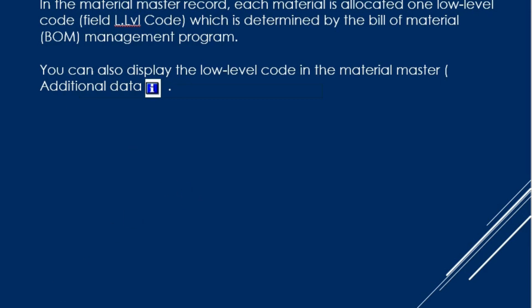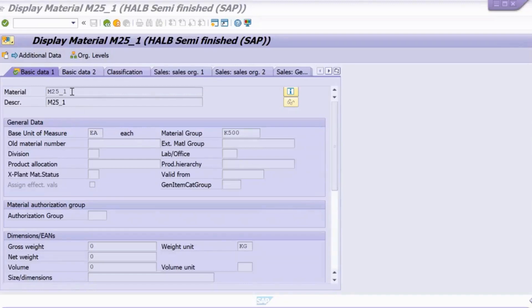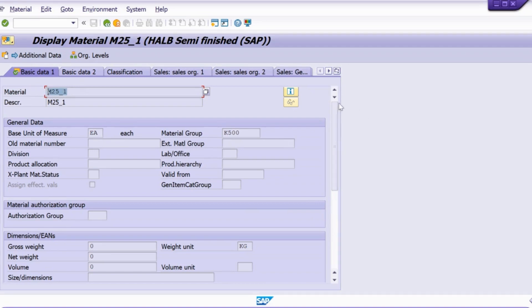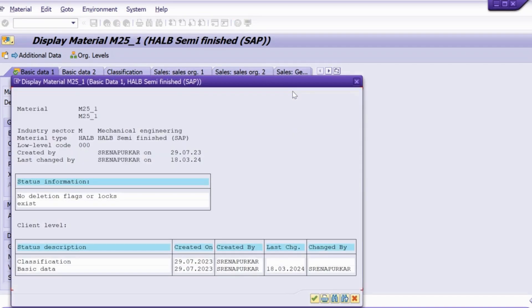The low level code can be found in the MARA table or directly in the material master record. Each material has a low level code determined by its bill of material. In MM03, if you enter a material and click the information icon, you can see the low level code that has been assigned to that material.